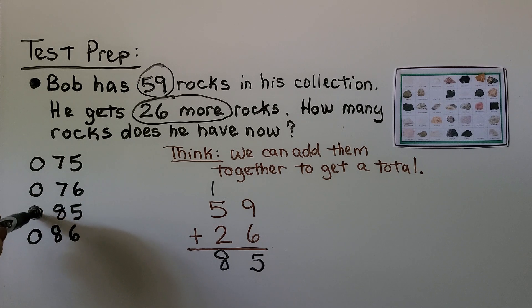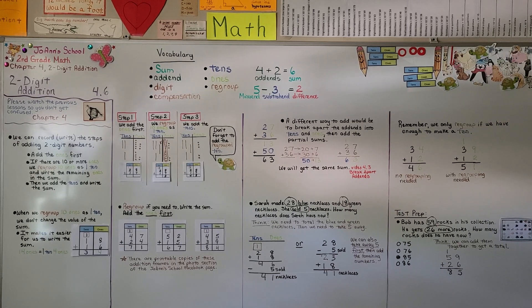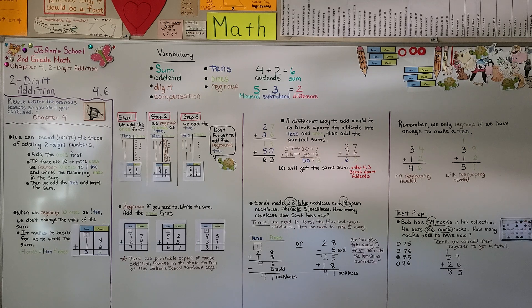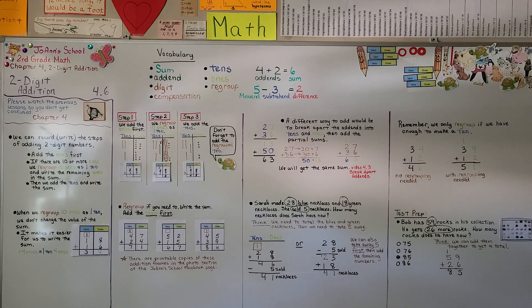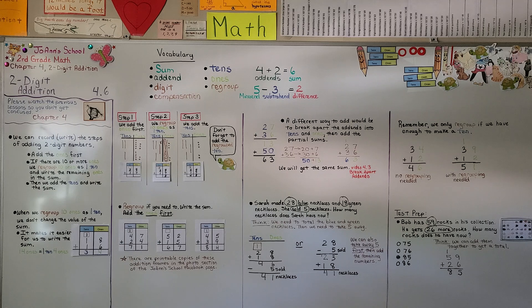So as you're adding 2 digit addition and you're regrouping, don't forget to add that regroup to 10. You want to make sure you include it in the sum. For our next lesson, 4.7, we're going to practice 2 digit addition some more. Stay strong. Stay positive. Stay safe. And I hope you join me next time. Bye.